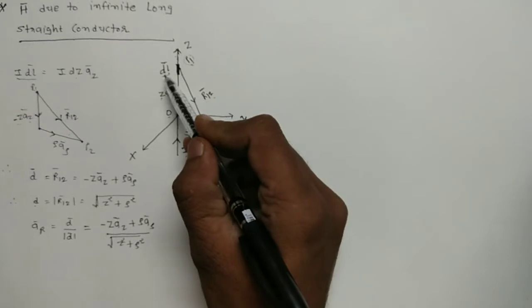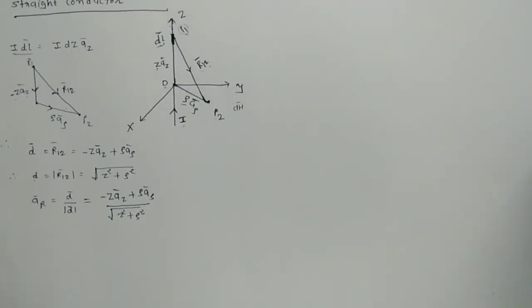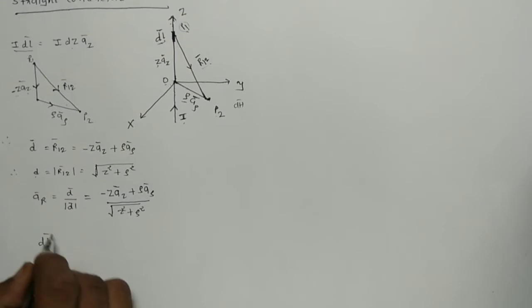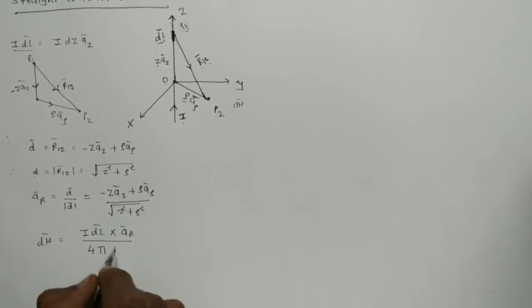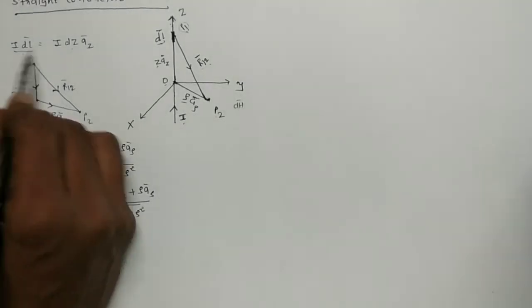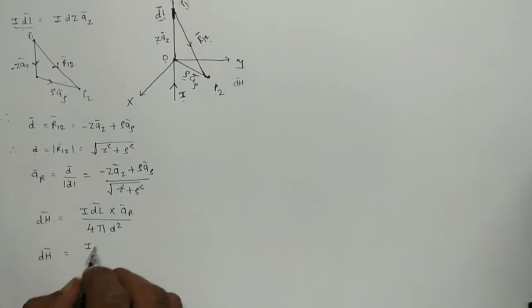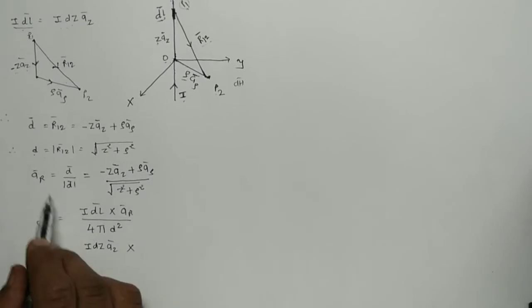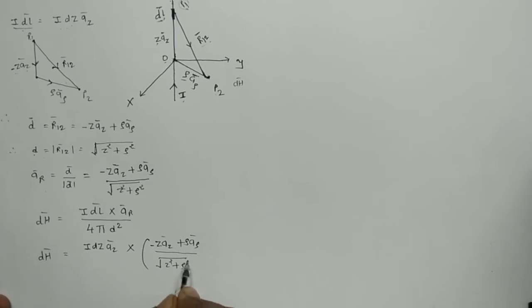Due to this differential current element dL̄, the magnetic field intensity dH̄ at point P2 by Biot-Savart Law is given by: dH̄ = IDL̄ × Âr / (4πd²), as discussed in the last video. Now putting IDL̄ = IDZ·ÂZ, I am writing dH̄ = IDZ·ÂZ × [(-ZÂZ + ρÂρ) / √(Z² + ρ²)] / (4πd²). The value of d² and the square root cancel, leaving Z² + ρ².